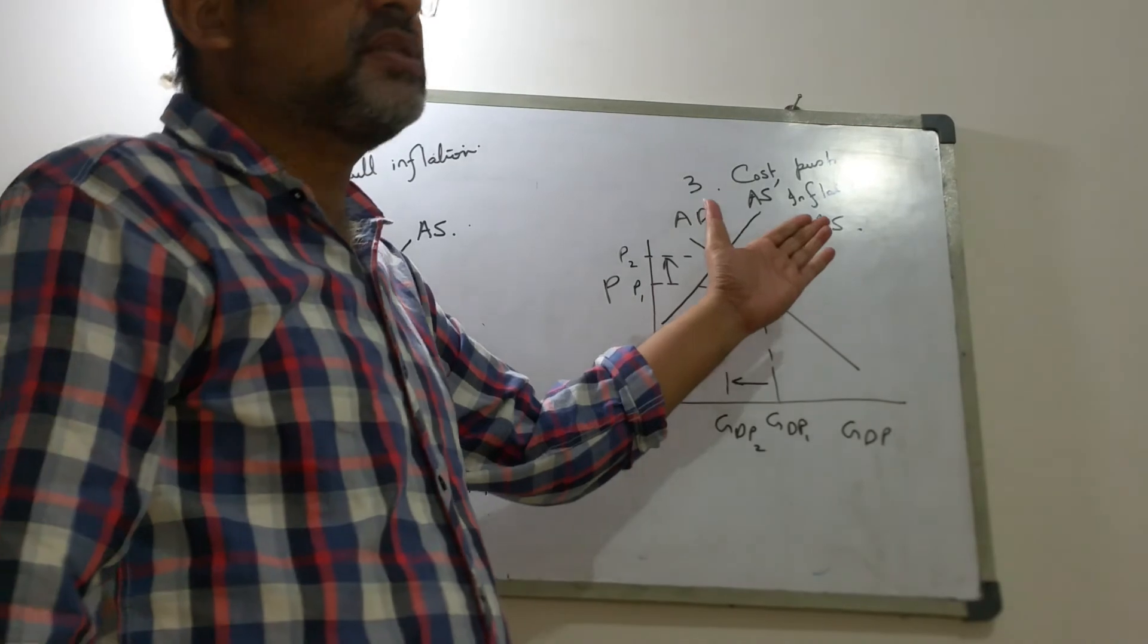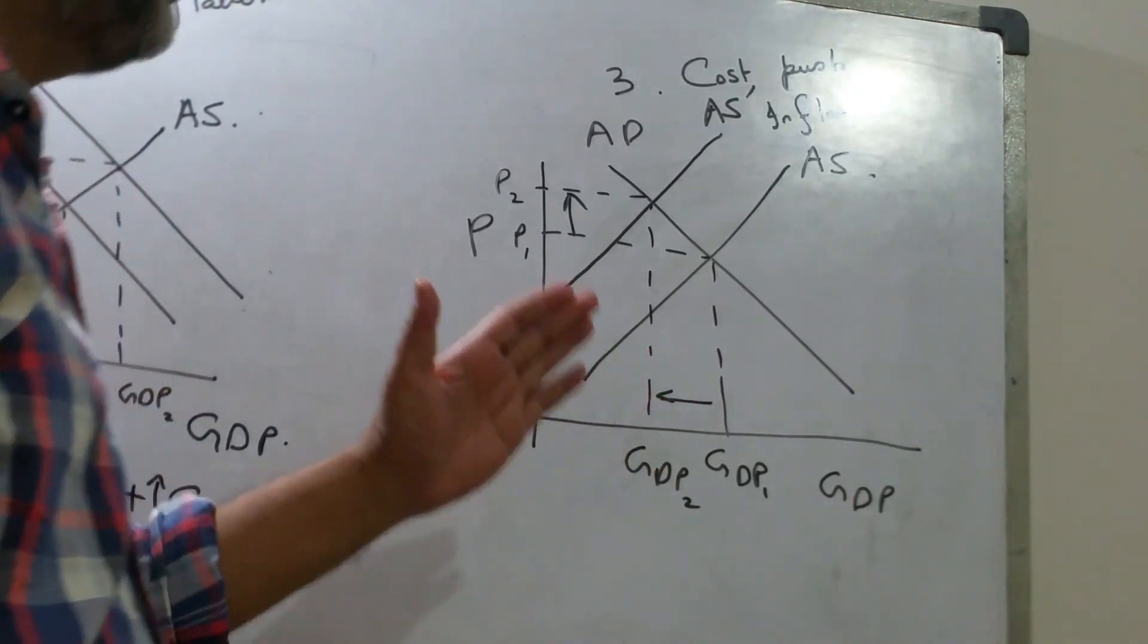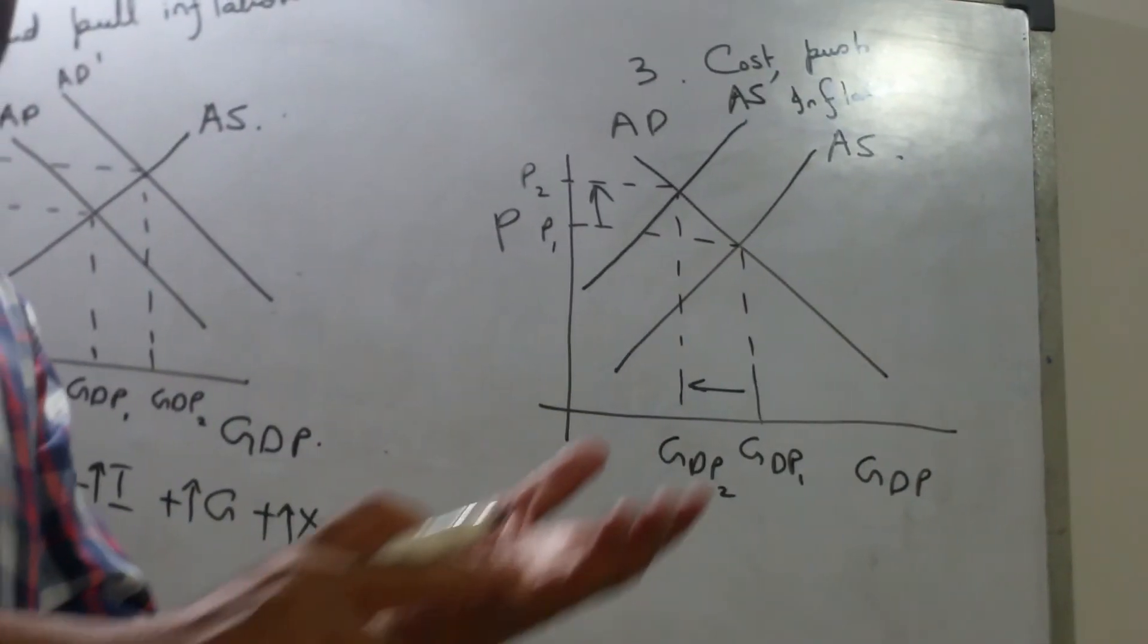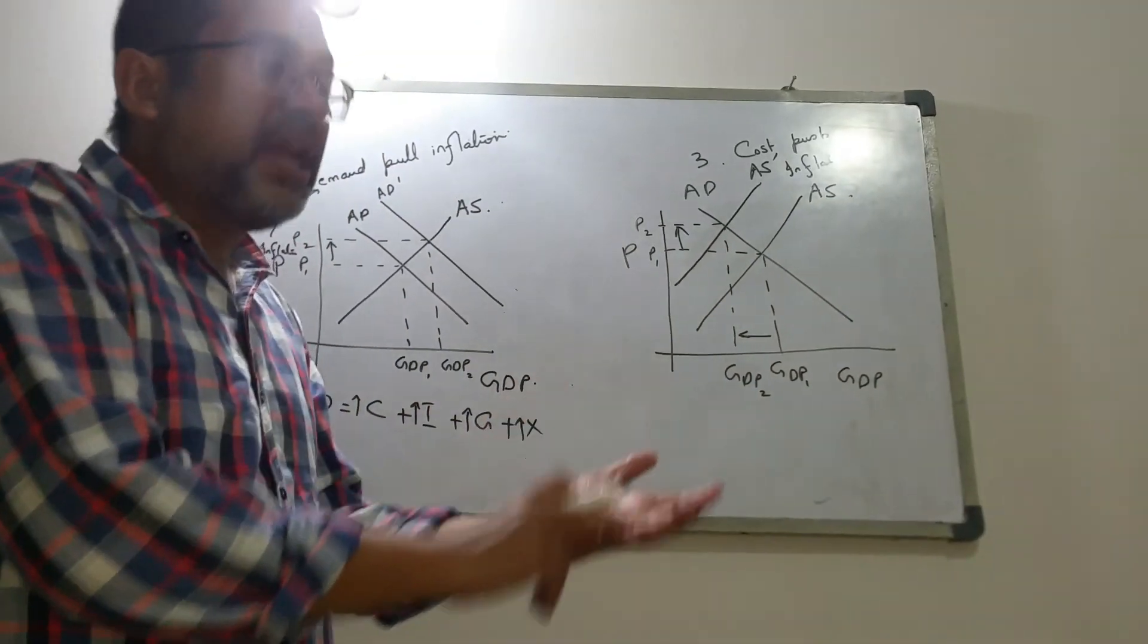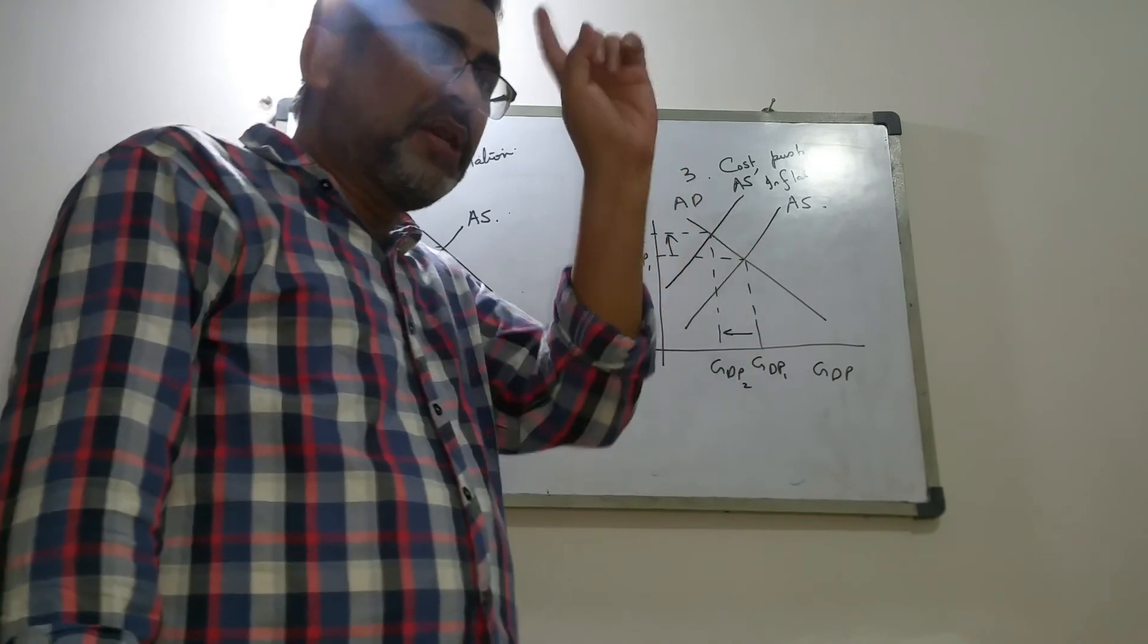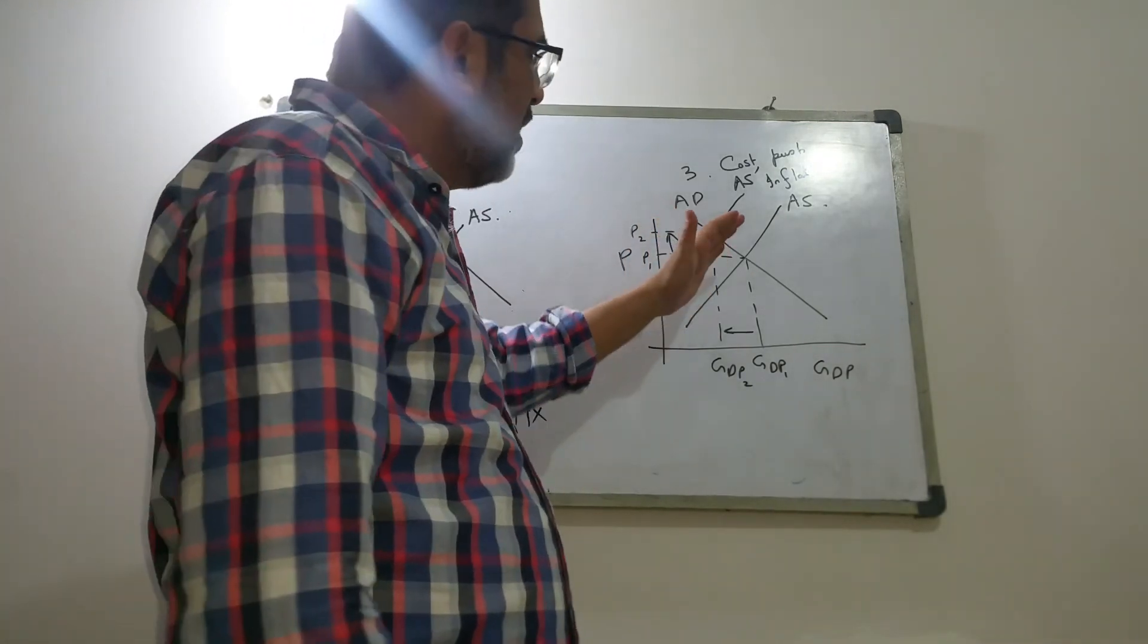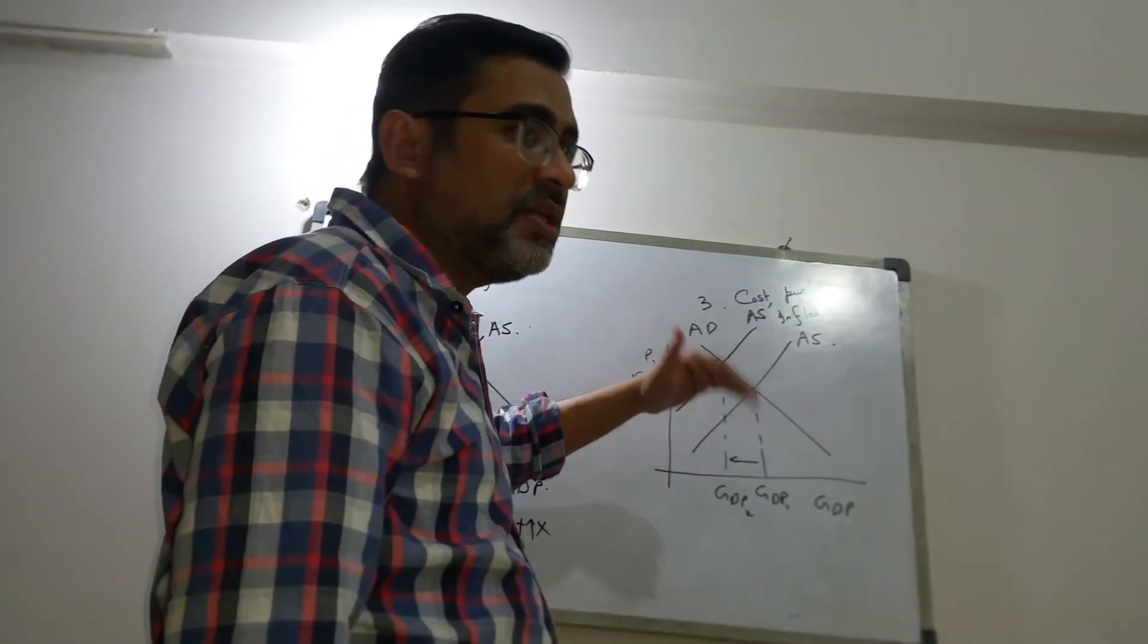So this inflation is caused not by the increase in demand but because of increase in the input costs. Why would aggregate supply fall? The aggregate supply falls if the raw material becomes expensive, if labor becomes expensive, if fuel becomes expensive, if electricity becomes expensive. In other words, remember factors affecting supply all related to cost of production. So if the cost of production in the country rises, aggregate supply in the country will fall and GDP will fall with it, but the prices will be pushed up.